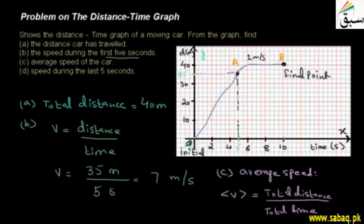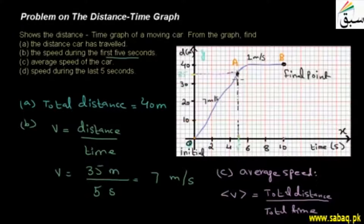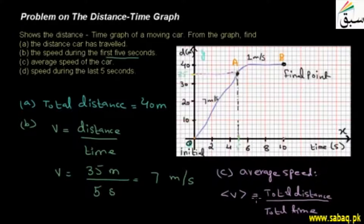The speed from O to point A was 7 meters per second — the speed was higher there — and from A to B the speed was lower at 1 meter per second. This way we can calculate every point according to the question. Whatever values are given in the graph, you remove the values from the graph, put them into the formulas, and find out the answers.